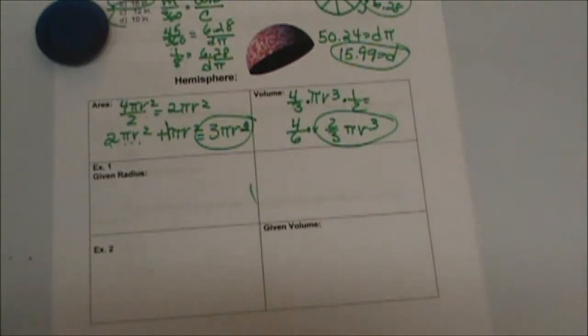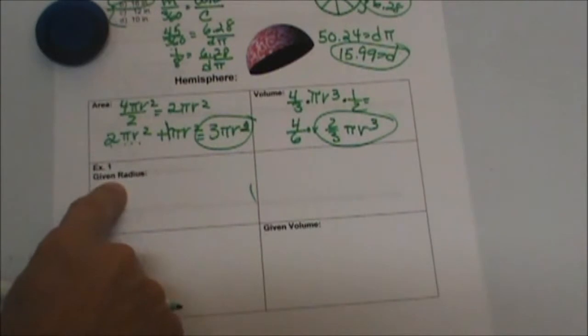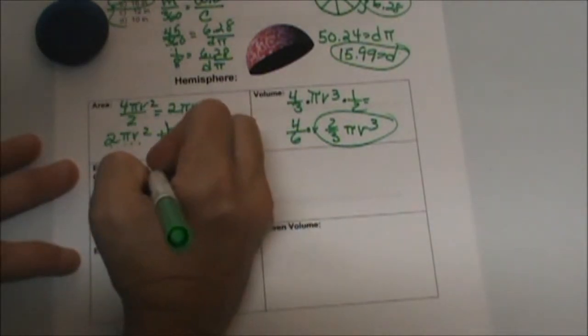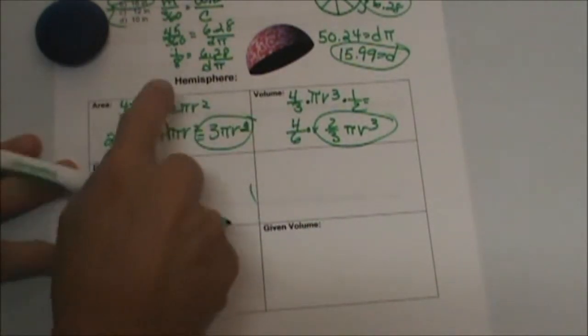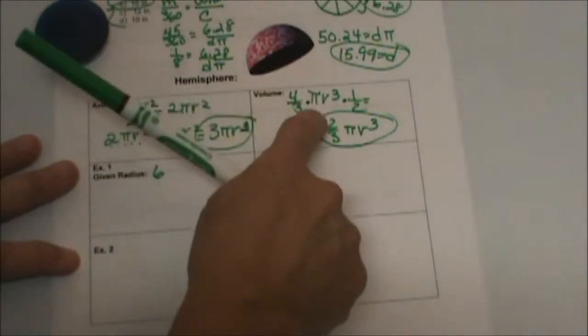Okay? That's how you find the volume. So let's do one forward one. Given a radius of let's say 6, find the surface area and find the volume.